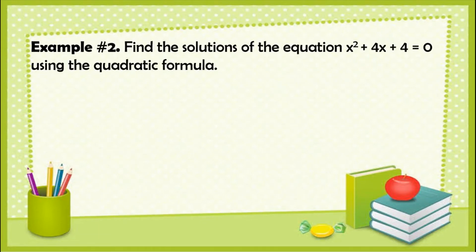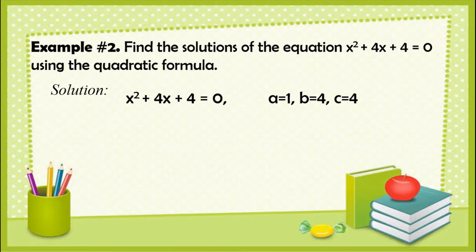For the next example: find the solutions of the quadratic equation x squared plus 4x plus 4 equals 0 using the quadratic formula. Step 1 — standard form: since the equation is already in standard form, we proceed to step 2. Identify the values of a, b, and c: a equals 1, b equals 4, and c equals 4.